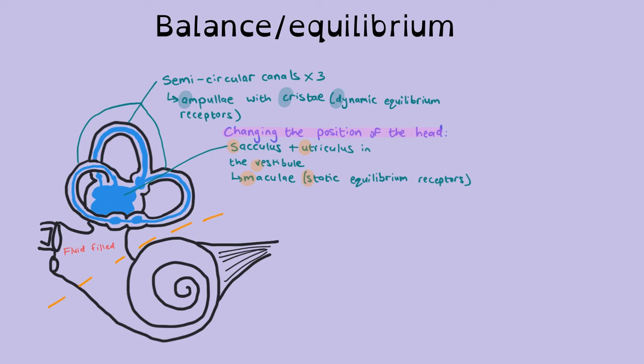You're only changing the position of your head in relation to gravity. So looking up, down, left, right, etc. So your body is stationary. That's why we call it static equilibrium.